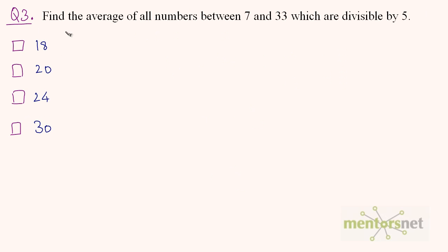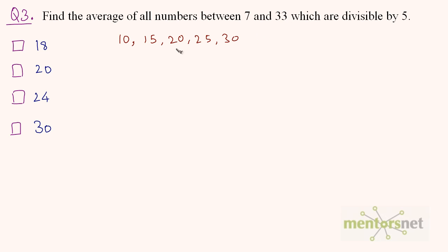Another similar question: find the average of all numbers between 7 and 33 which are divisible by 5. The closest number greater than 7 and divisible by 5 is 10, then 15, then 20, then 25, then 30 — and 35 is greater than 33 so we don't include it. These are the numbers to average.